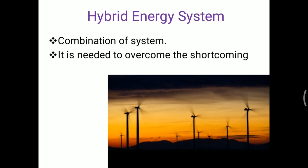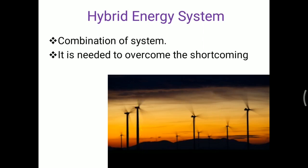The disadvantage of each individual system is that continuous supply is not possible. To ensure continuous supply, we use a hybrid system. When wind energy supply is low during the day, solar energy can increase the supply. Whereas at night, when solar supply is zero, wind energy produces maximum supply, so continuous supply can be maintained.